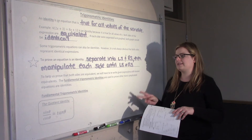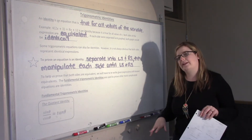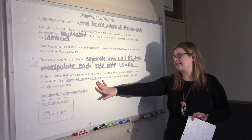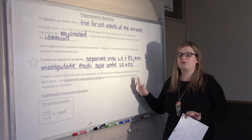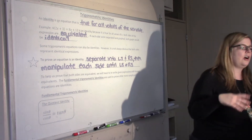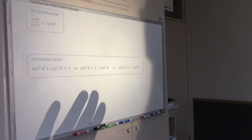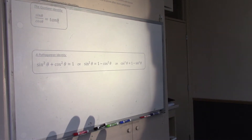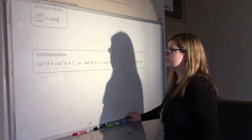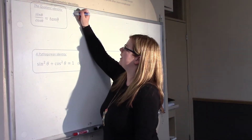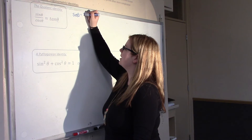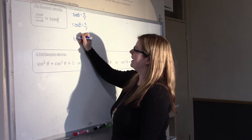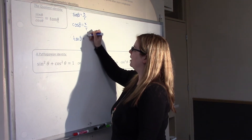The first two identities that we're going to prove, we're going to use to prove a whole bunch of other types of identities. These are called the fundamental trigonometric identities because they're used so often to prove more complicated equations or identities. With both of them, we're going to go back to our definition of sine, cos, and tan on the Cartesian plane. Sine θ is y over r, cos θ is x over r, and tan θ is y over x.